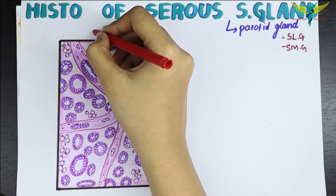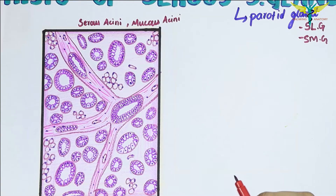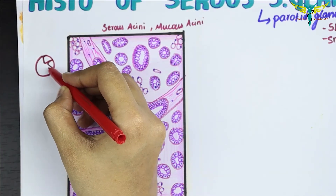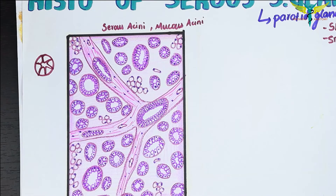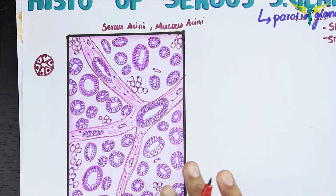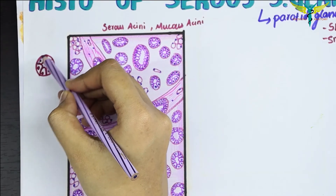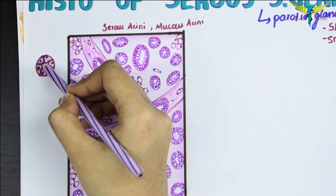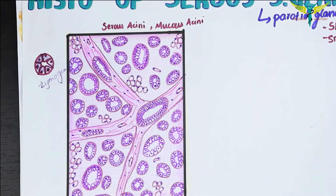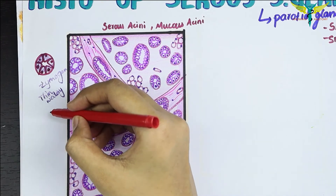Now let's learn about the acini. The serous acini are triangular in shape — I am drawing it here. The cells are triangular with a rounded nucleus at the base. The cell boundaries are indistinct, and they contain zymogen granules. The serous acini are always darkly stained under microscopy because of the presence of these zymogen granules.